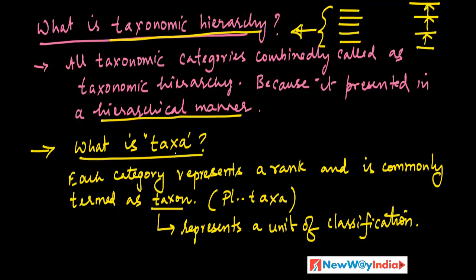What is a taxon? Each category represents a rank and is commonly termed a taxon. Each one has a specific name and is a taxon. The plural is taxa. It represents a unit of classification, and we will see all the taxa in the next slide.